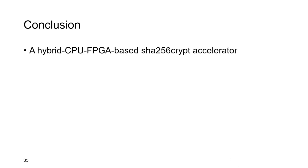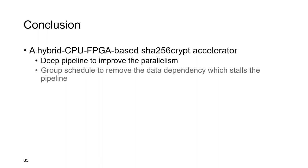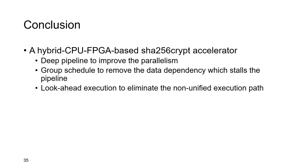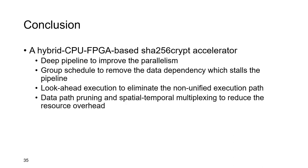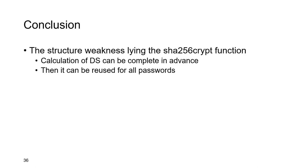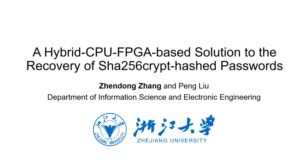Finally, let's draw the conclusion. In this paper, we proposed a hybrid CPU-FPGA-based SHA-256-crypt accelerator. It adapts deep pipeline to improve parallelism. Group schedule is used to remove the data dependency that stalls the pipeline. Look-ahead execution is used to eliminate non-unified execution paths. Data path pruning and spatial-temporal multiplexing are applied to reduce resource overhead. We also found a structural weakness in the SHA-256-crypt algorithm where the calculation of digest S can be finished in advance and reused for multiple passwords. Attackers may leverage this weakness to build more efficient cracking hardware. Thanks for listening.